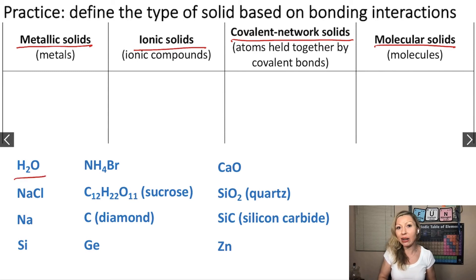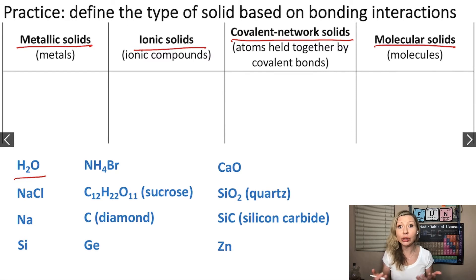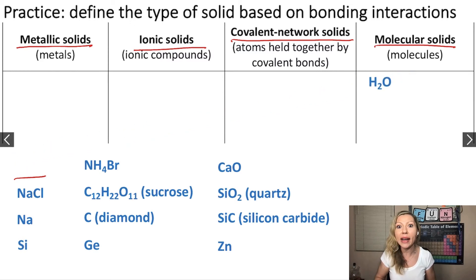H2O — solid H2O, or ice. Is it a metallic solid, ionic solid, covalent network solid, or molecular solid? H2O is a molecule, and it is composed of non-metals from the periodic table, so this is going to be a molecular solid.